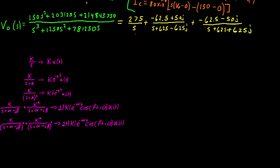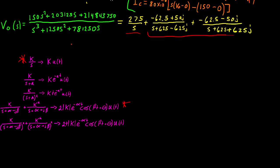Using our table, we can find the inverse Laplace transform based on these terms. The first term matches the form for a constant, and the two complex terms fit the other form. So we can begin writing V_o(t). This is going to equal our first term: after the inverse Laplace, we get K·u(t), where K = 275, multiplied by u(t). The u(t) keeps our function only defined for values greater than 0, because before t=0 we had a different circuit when the switch was in a different position.